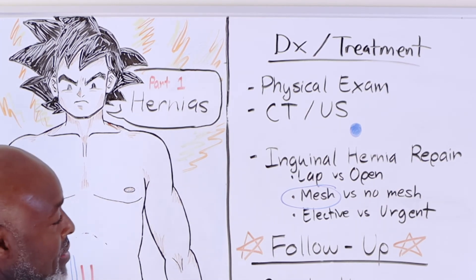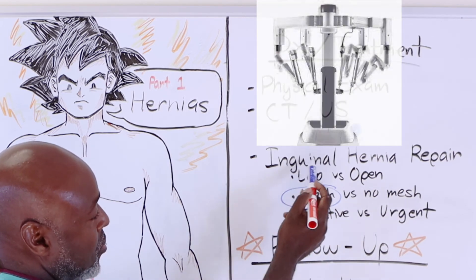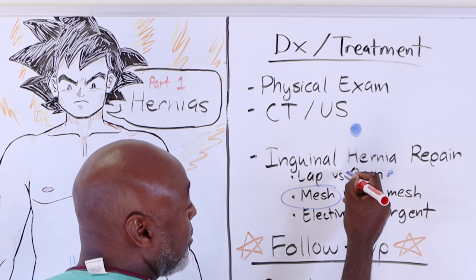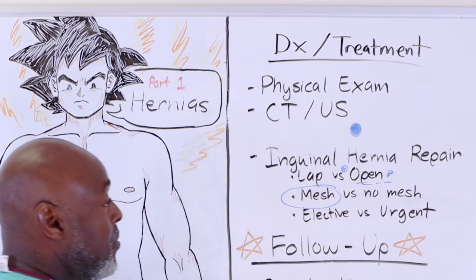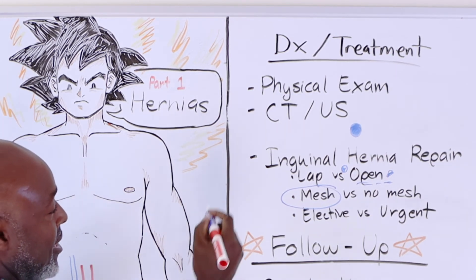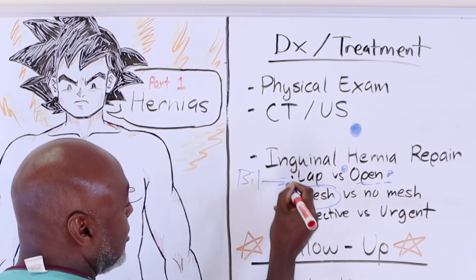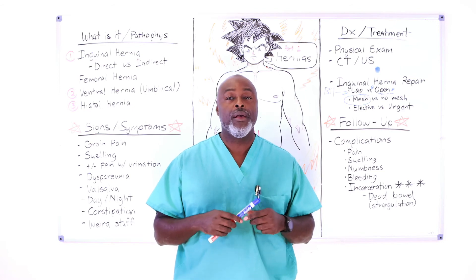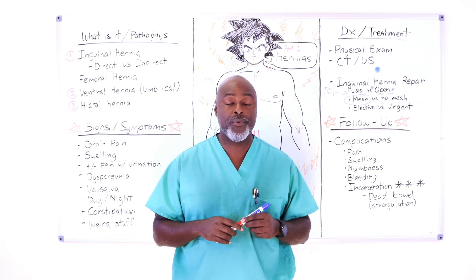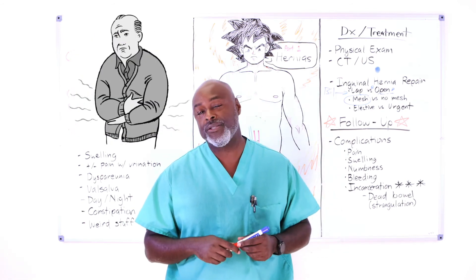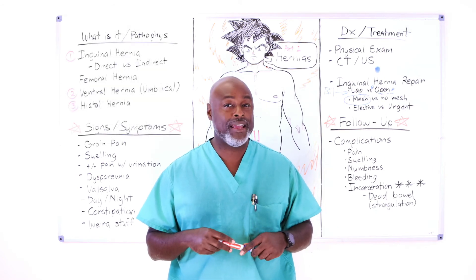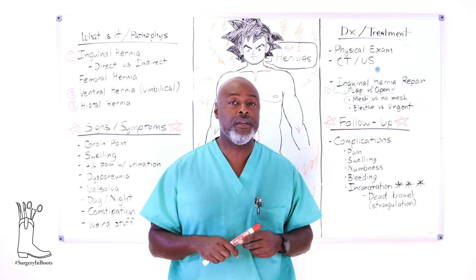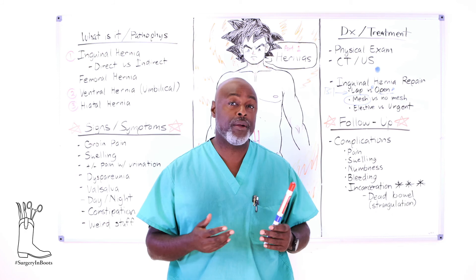Laparoscopic versus open is dealer's choice — the robot is the new hot thing. For a single hernia, if you want it done with low recurrence and don't want to deal with anything, I recommend an open repair. However, if you have bilateral inguinal hernias, the right approach is laparoscopic. A laparoscopic approach for bilateral hernias is better from a pain standpoint — if you try to do bilateral inguinal hernias open, those patients can't walk, they hate their surgeon for three to four weeks. I would not recommend bilateral open inguinal hernia repair; do it laparoscopically or with a robot.